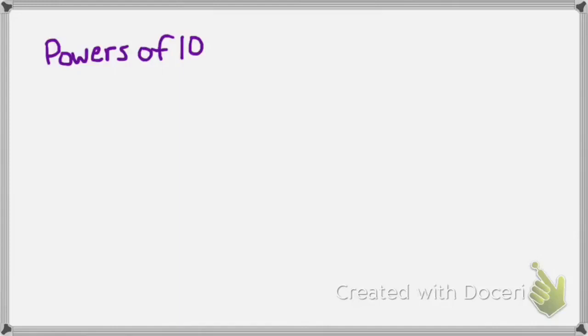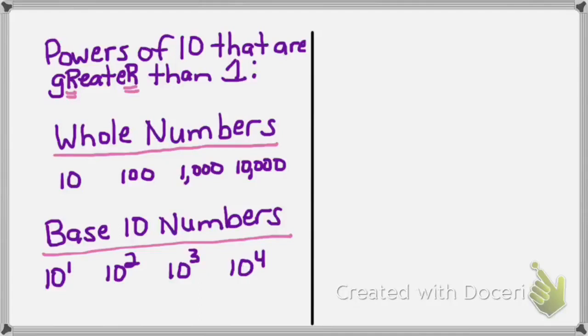As a review, powers of 10 are numbers with a 1 and zeros. Some of them are greater than 1, and others are less than 1. Powers of 10 that are greater than 1 are whole numbers like 10, 100, 1000, 10,000, and base 10 numbers — numbers where the base is 10 and there's an exponent — like 10 to the first power, 10 to the second power, 10 to the third power, or 10 to the fourth power. Whole numbers and base 10 numbers with exponents are greater than 1.